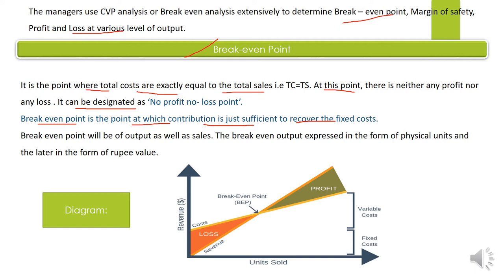Break-even point output का भी हो सकता है और sales का भी। अगर output का है तो physical units की form में express होगा; अगर sales का है तो rupee value की form में। Diagram में: OX axis पे units sold, OY axis पे revenues। यह line represents total sales, यह line represents total cost — और जहाँ ये दोनों lines intersect करती हैं उस point को break-even point कहा जाता है, that means no profit and loss point।